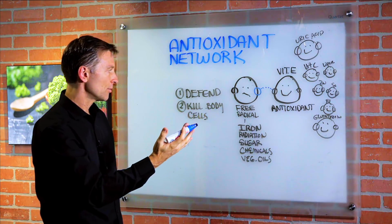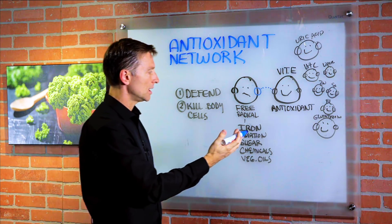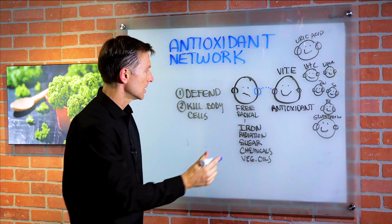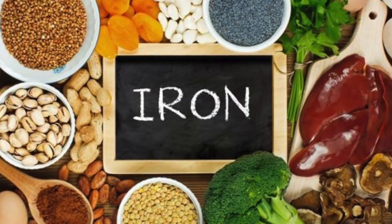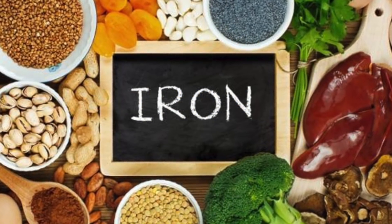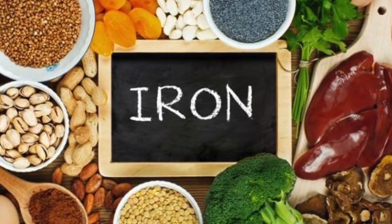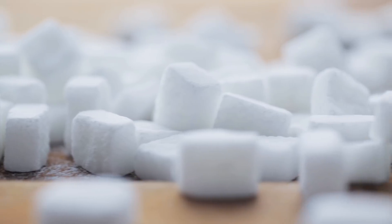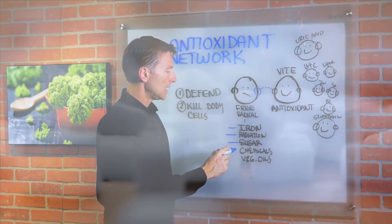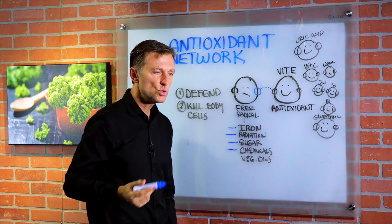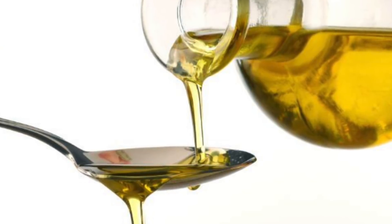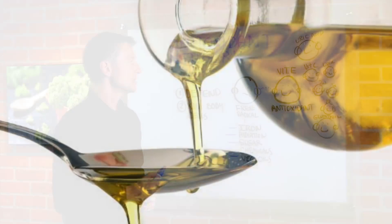Examples of free radicals or oxidants would be iron — free iron, like in some of the enriched foods we consume — radiation, sugar. Large quantities of sugar really destroy the body. Chemicals, pollution, smoking, and vegetable oils can also act as oxidants and create free radicals.